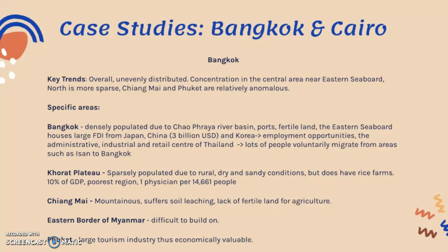Looking at Bangkok specifically, it is very densely populated and is considered the core of Thailand in the core-periphery model. This is due to the Chao Phraya river basin providing ports and fertile land, and the eastern seaboard south of Bangkok attracting large foreign direct investment — for example, Japan, China investing 3 billion US dollars, and Korea — which employs much of the population, driving voluntary internal migration from peripheral areas like Isan. Bangkok is also the administrative, industrial, and retail center of Thailand.